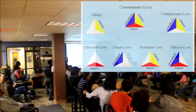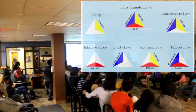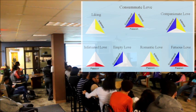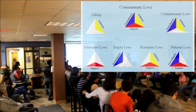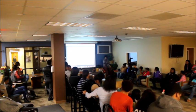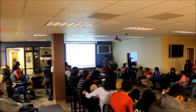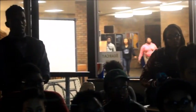The thing about this theory is, according to this, most people don't get all three. Most people get one out of three, two out of three, but they don't get all three. For example, romantic love — that's a combination of intimacy and passion without commitment.